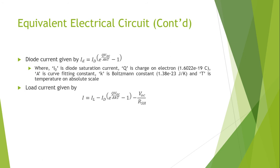The load current is given by I equals IL minus the diode current given by this formula minus VOC divided by RSH, where RSH is the shunt resistor connected in parallel with the current source.